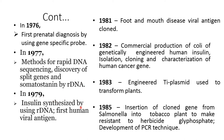In 1979, insulin was synthesized using recombinant DNA, and the first human viral antigen was produced. In 1981, foot-and-mouth viral antigen was cloned. In 1982, commercial production of human insulin via genetic engineering began, along with isolation, cloning, and characterization of human cancer genes.